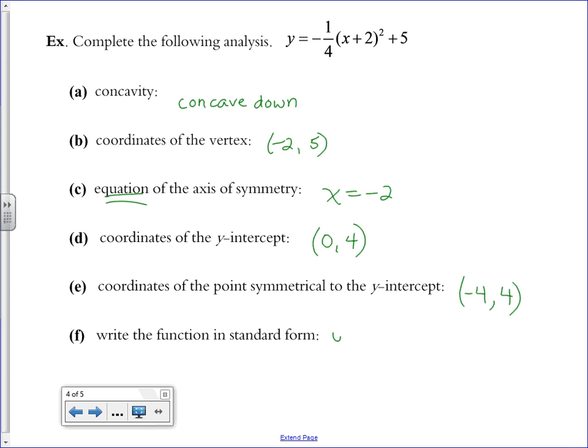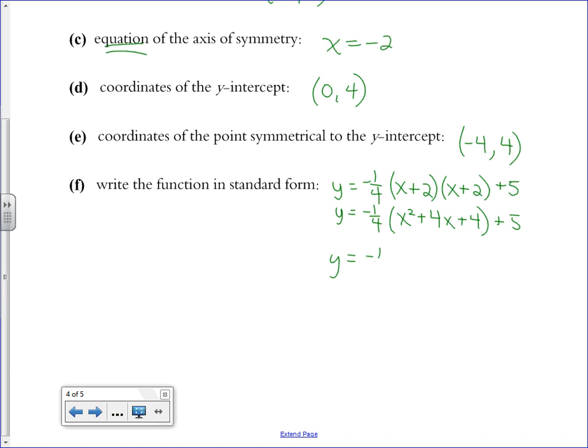And to write the function in standard form, here we have a little bit of work to do. It's given to us in vertex form. I'm going to take that x plus 2, which is squared, and write it twice, because that's what the squared means. Then I'm going to multiply x plus 2 times x plus 2. I'm going to leave this negative 1 fourth out front for now. When I do x plus 2 times x plus 2, it's like distributing, right? x times x, x times 2, and then 2 times the x, and then 2 times the 2. And you end up with x squared plus 4x plus 4. Now I can distribute my negative 1 fourth. Combine the like terms and constant terms that I have there at the end. And here's the function written in standard form, y equals ax squared plus bx plus c.